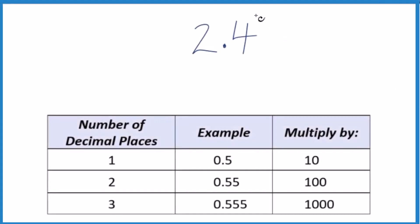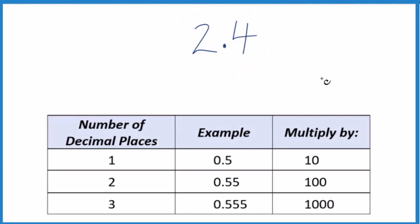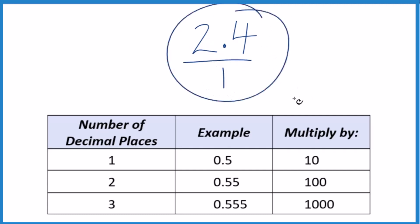If you're asked to write the number 2.4 as a fraction, here's how you do it. Let's call this 2.4 over 1. Since we're dividing by 1, it doesn't really change anything — it's still 2.4. Now we have the start of a fraction.